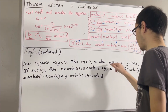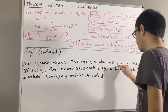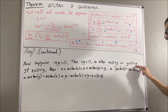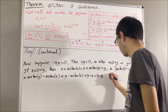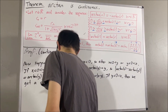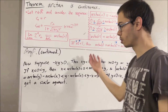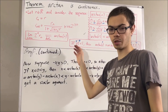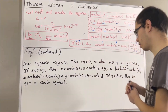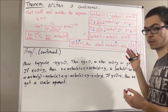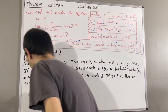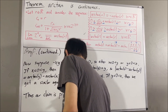The case where y is less than 0 and x is greater than 0 yields a very similar argument. So having considered both cases — negative xy less than or equal to 0 and negative xy greater than 0 — in all cases we have that the absolute value of arctangent of x minus arctangent of y is less than or equal to the absolute value of x minus y. Our claim is proven.